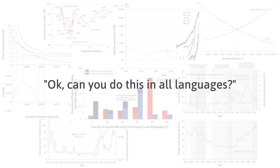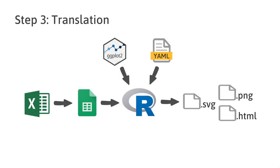Having done this, the publishing house were now quite impressed with our skills and starting to believe in us that we could actually do this. The next question then was: can you do this in all languages? This economics textbook has been translated into several languages and so we needed to figure out how to handle the automatic translation of these figures in our pipeline. This third step therefore focused on translation and the solution that we came up with was to capture the translated strings in a YAML file which is then read into the R script for the figure.